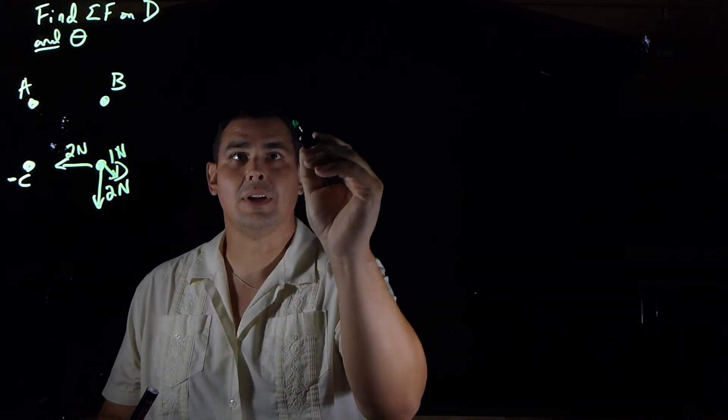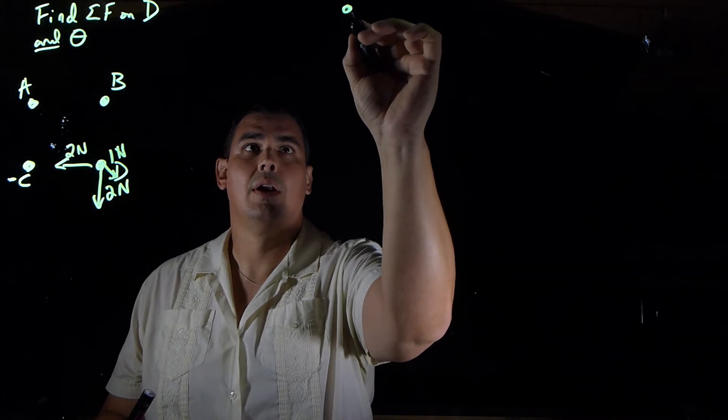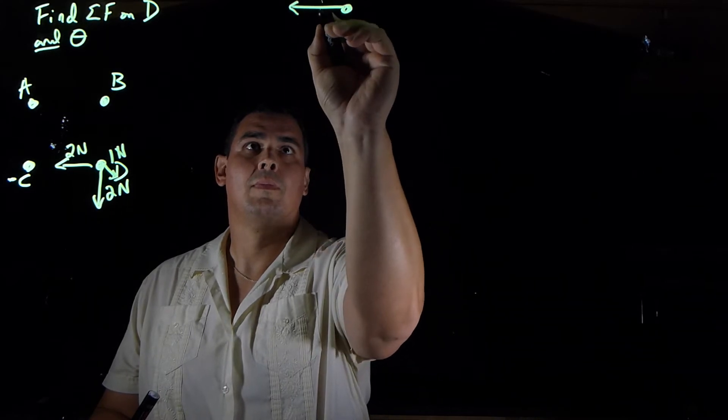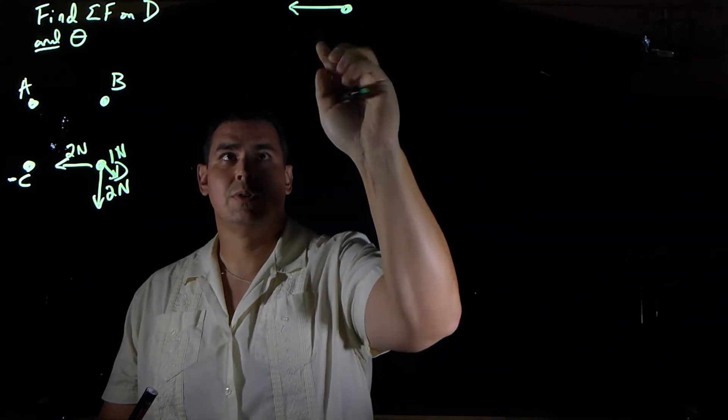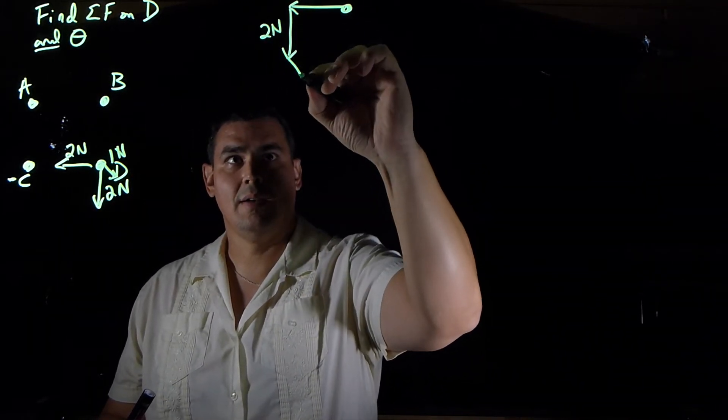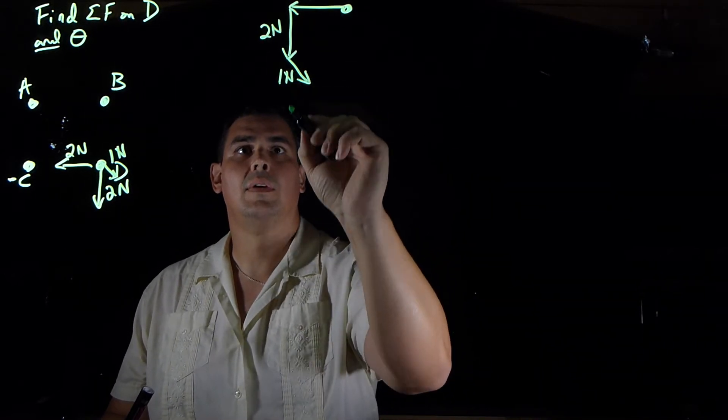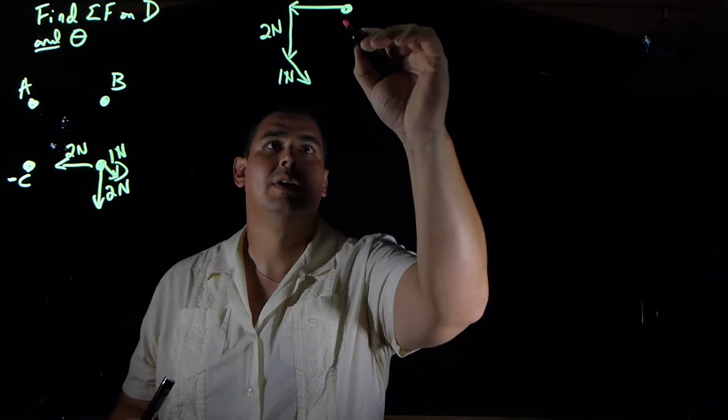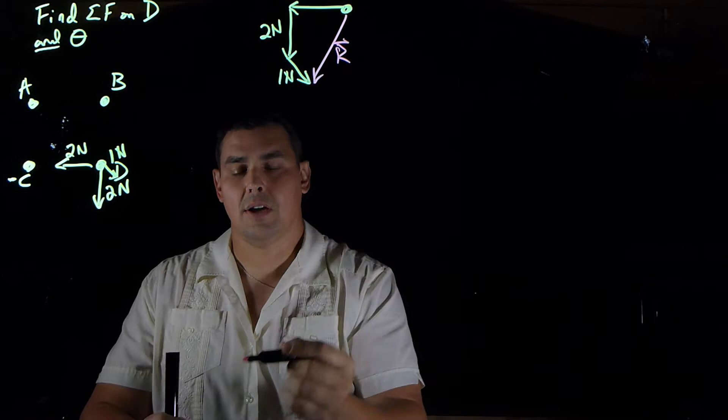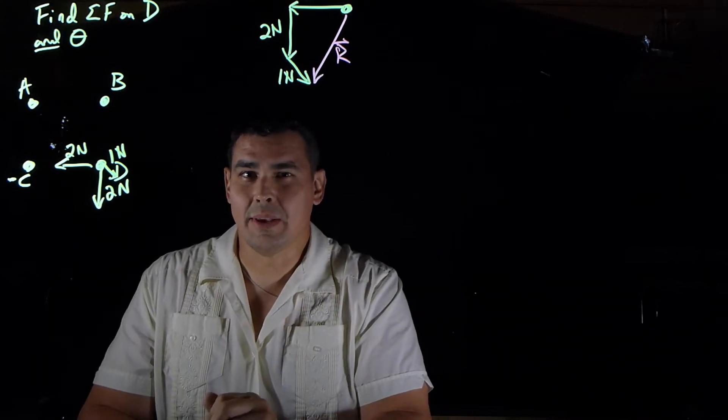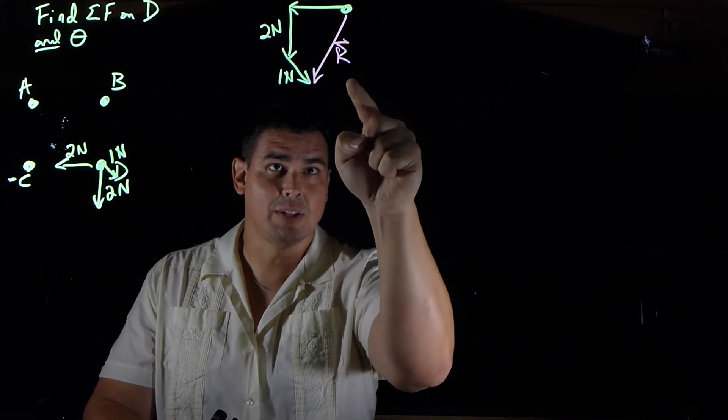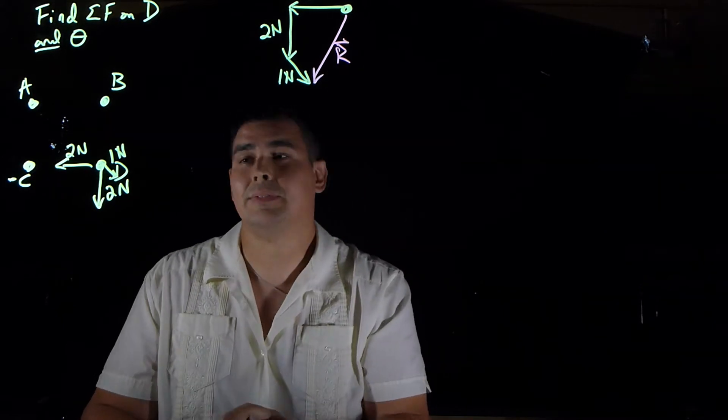Okay, so what that would look like, I'll do it right here. There's D. So here's the 2 newton force. Another 2 newton force. And then a 1 newton force kind of pointing down like that. And so my resultant looks like that. All right, so I can't do this the same way as before because I don't have grid paper. If I had grid paper on here and I knew how much this was and how much that was, I could make a little right triangle. But see how this doesn't really make a triangle.